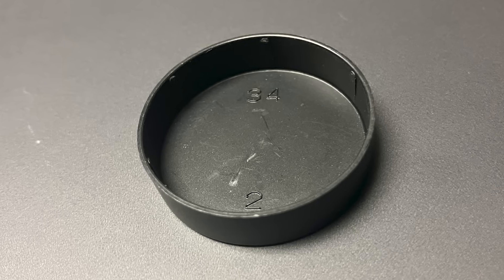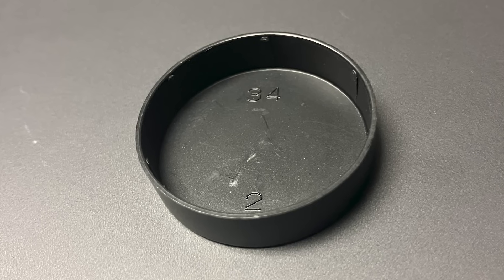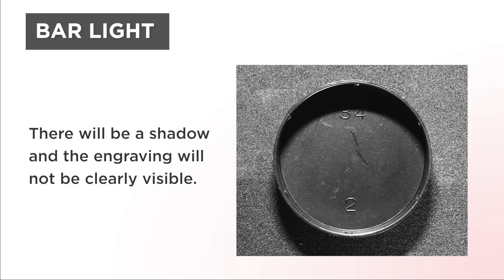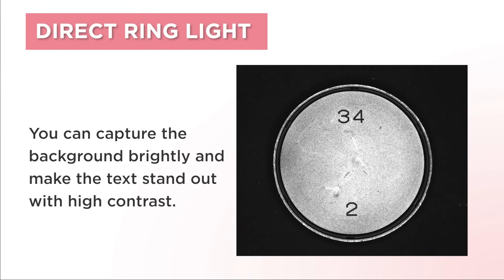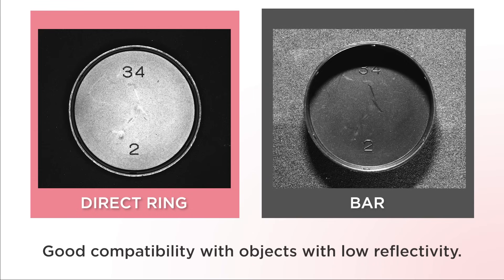Let's take an image of the engraving on a lens cap. If you take an image using bar lighting, there will be a shadow and the engraving will not be clearly visible. If you image the same engraving using direct ring lighting, you can capture the background brightly and make the text stand out with high contrast. Direct ring lighting has good compatibility with objects with low reflectivity.